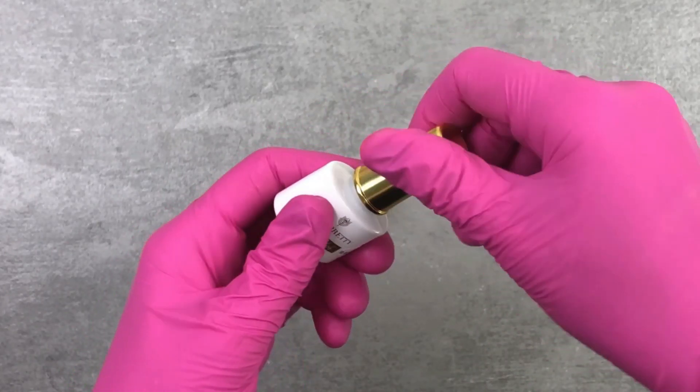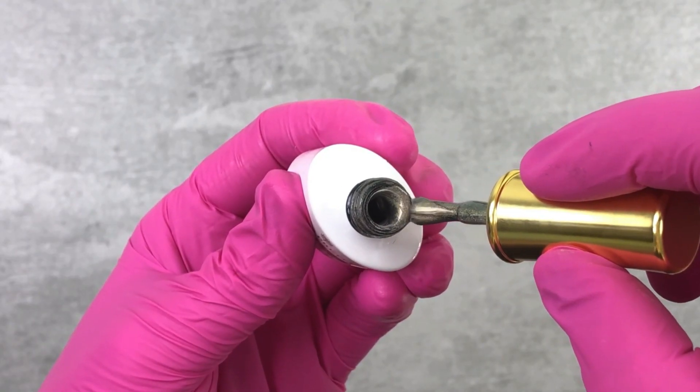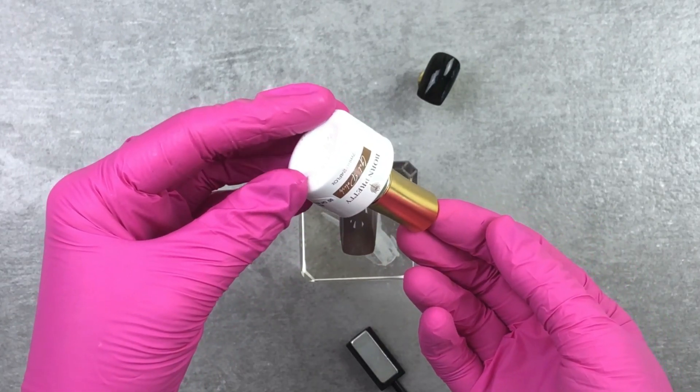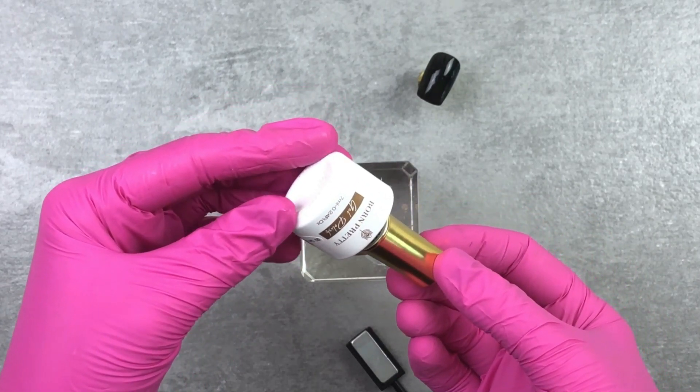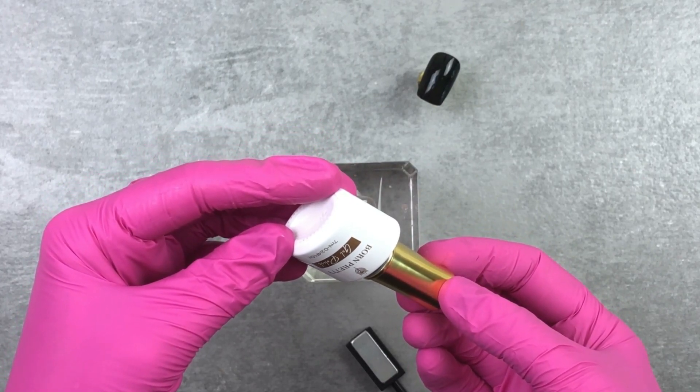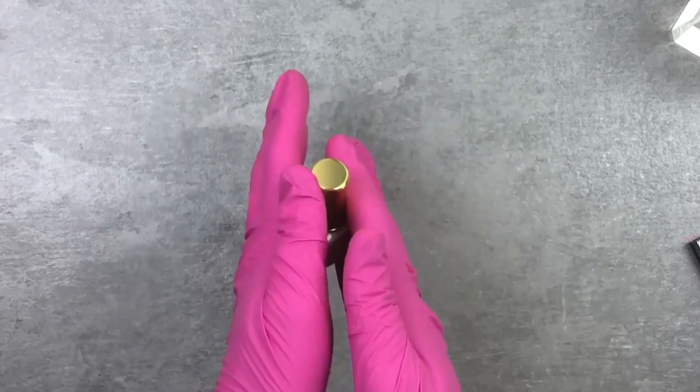Next is the magnetic gel polish. So for a tip when you're using this kind of polish, the best way to store it is upside down because those little magnetic glitters tend to sink to the bottom of the bottle a bit. Then mix it up for about 30 seconds.